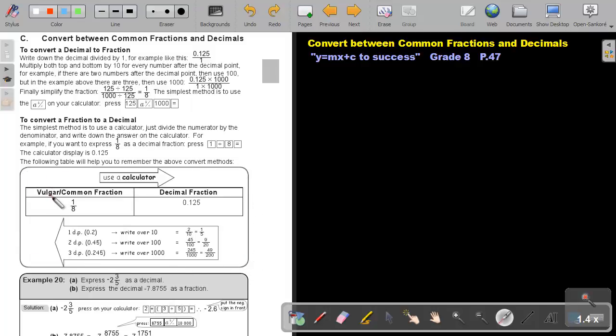If you want to go from a vulgar or common fraction to a decimal, you can just use a calculator. Just press 1 divide 8, and your calculator will display 0.125. If you want to go back to a vulgar or common fraction, you can remember this method.